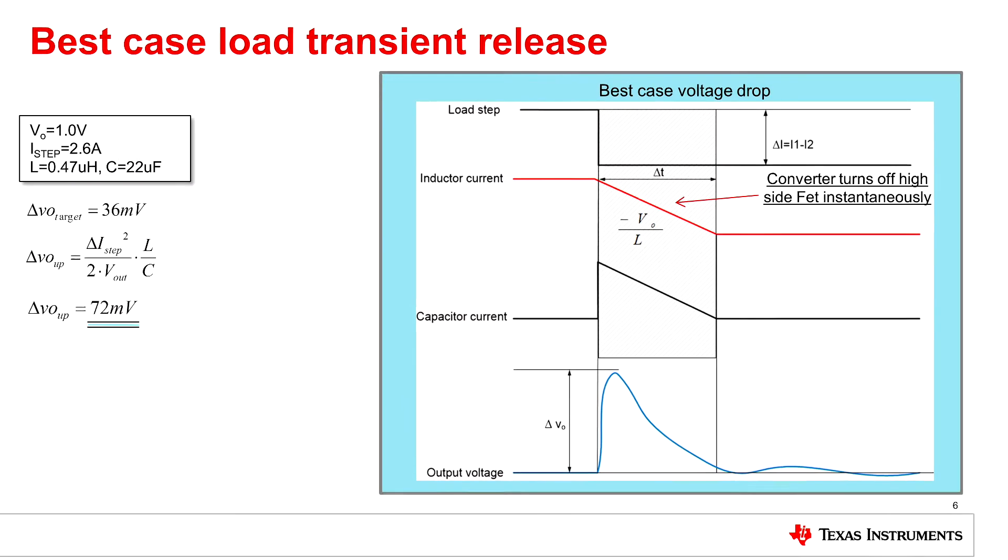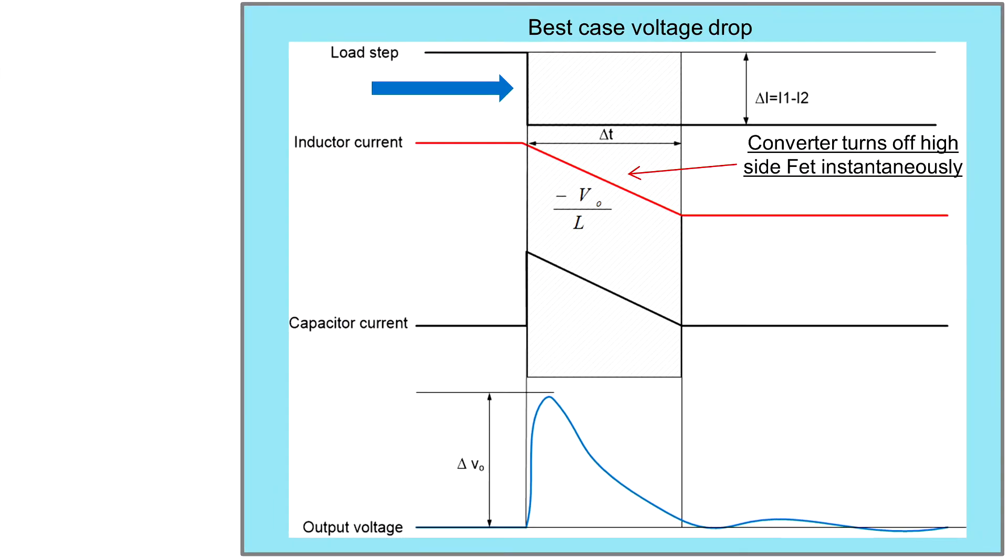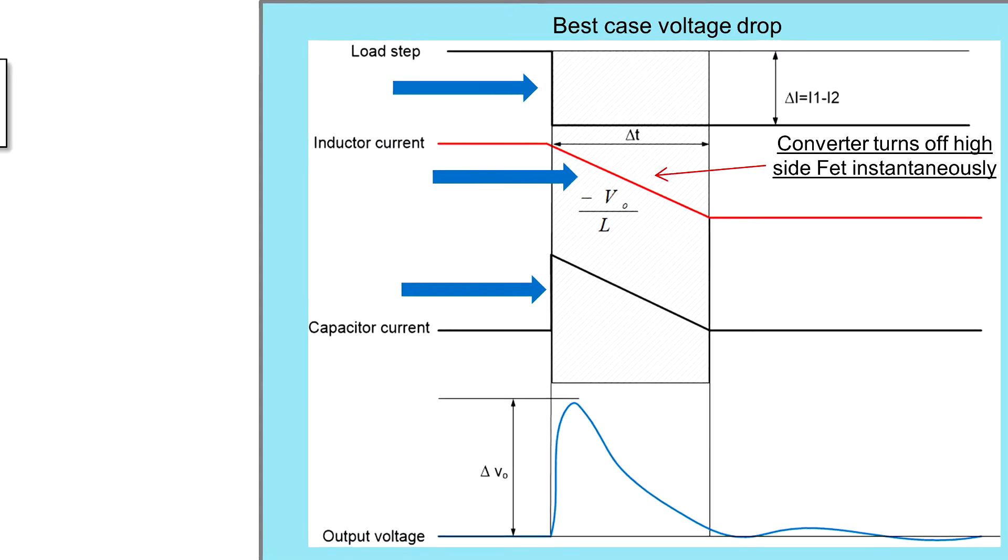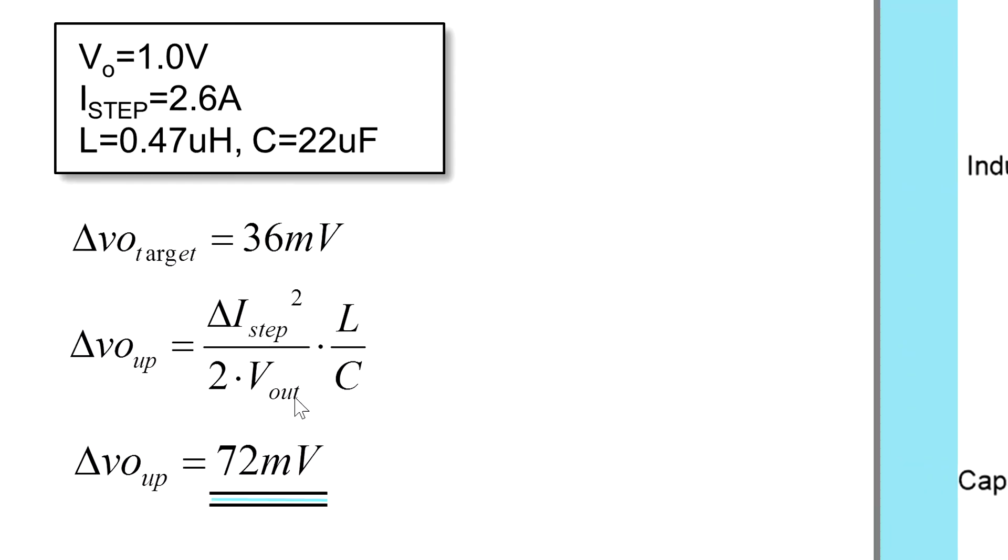Let's use the same principle for the load release. The load step takes place, the inductor current ramps down charging up the output capacitor causing an output voltage overshoot. And especially for very low output voltages this can cause an overshoot in this case of 72mV using a 22µF capacitor.